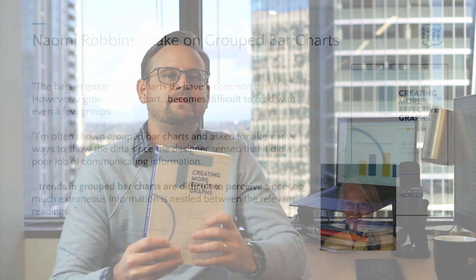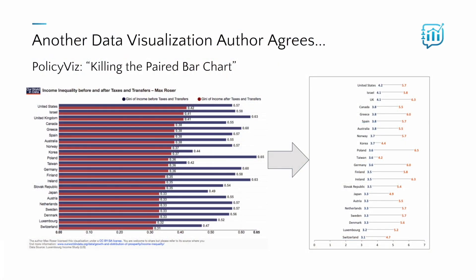Data visualization author Naomi Robbins pointed out in her book Creating More Effective Graphs that while grouped bar charts do have a common baseline, a grouped bar chart becomes difficult to read with even a few groups. She says: 'I'm often shown grouped bar charts and asked for alternate ways to show the data, since the designer sensed it did a poor job of communicating information.' She also notes that trends in grouped bar charts are difficult to perceive since too much extraneous information is nestled between the relevant readings. And one last dig: John, you cold-heartedly called for nothing less than killing the paired bar chart.